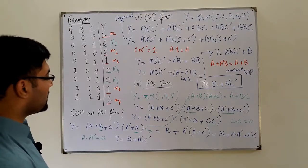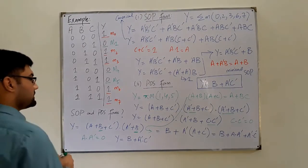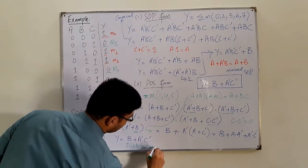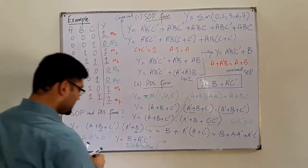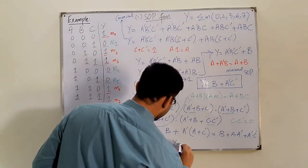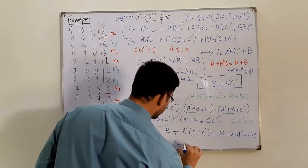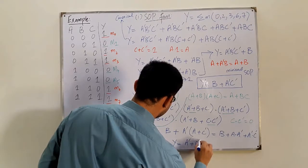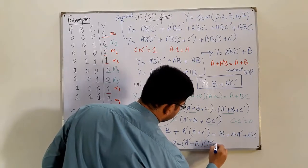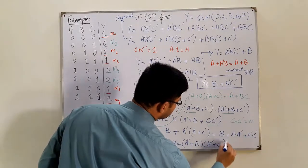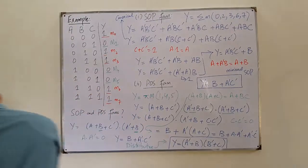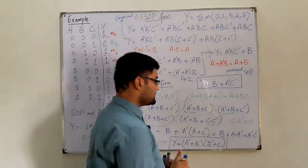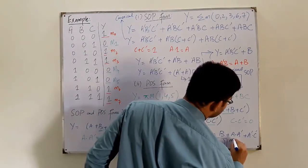Again using the distributive law a + bc = (a + b)(a + c), the function rearranges to Y = (A' + B)(B' + C). Let me check the book — yes, this is the minimal POS form.